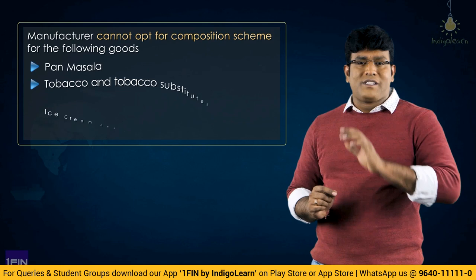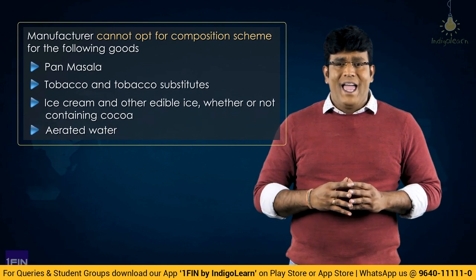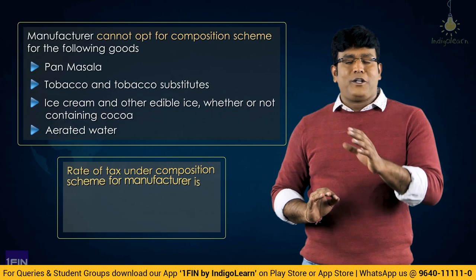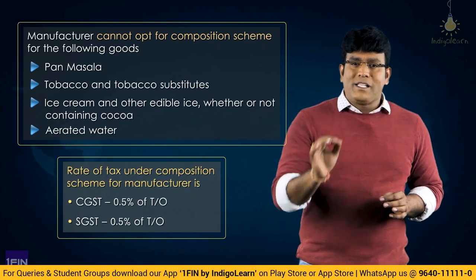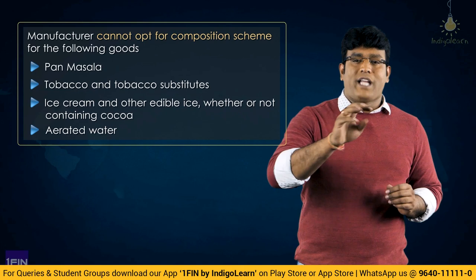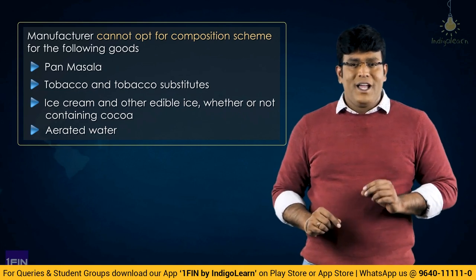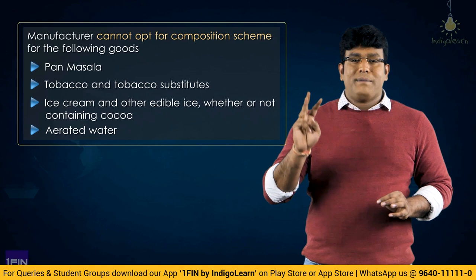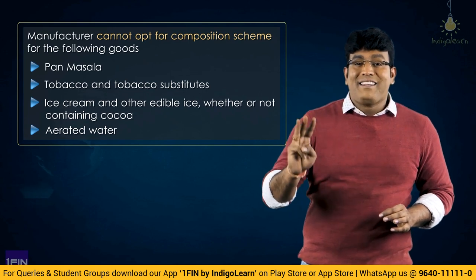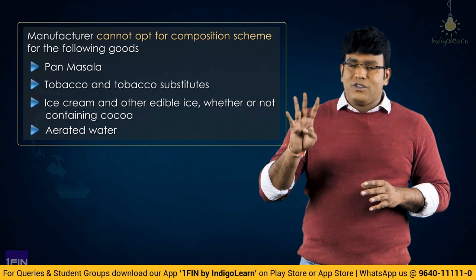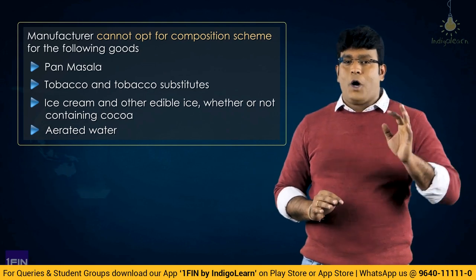We just discussed the interesting concept that manufacturers of certain goods cannot take the composition scheme. The rate of tax for manufacturers under composition scheme is 0.5% plus 0.5% of turnover. Manufacturers of four types of goods cannot take composition scheme: number one, Pan Masala; number two, Tobacco and tobacco substitutes; number three, Ice cream and other edible ice whether or not containing cocoa; and number four, Aerated waters.